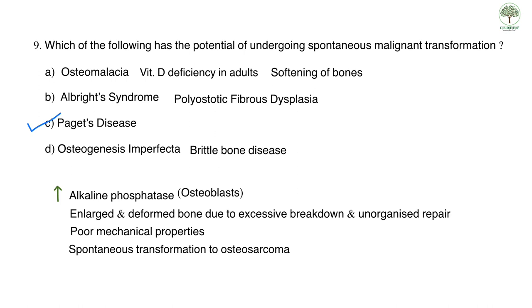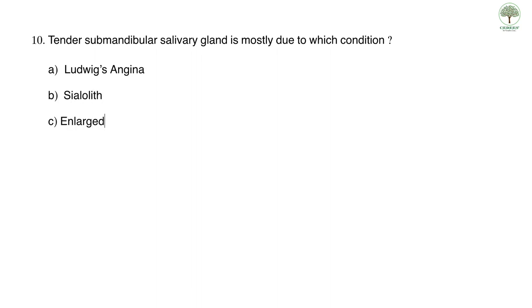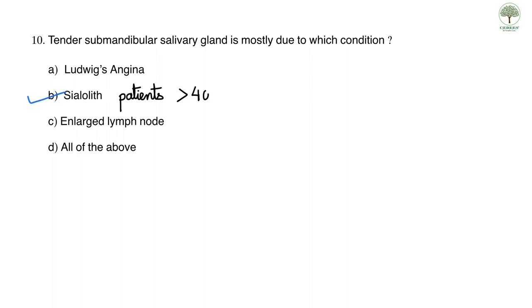Question ten: tender submandibular salivary gland is most commonly due to which condition? Options are Ludwig's angina, sialolith, enlarged lymph nodes, and all of the above. The correct answer is C, sialolith, especially in patients older than 40 years of age.